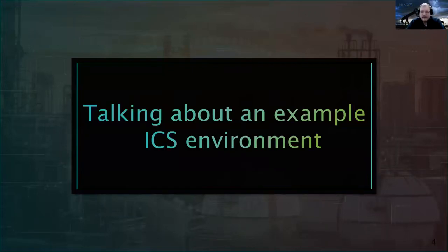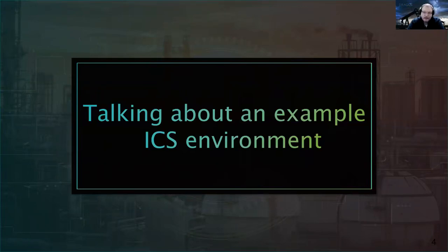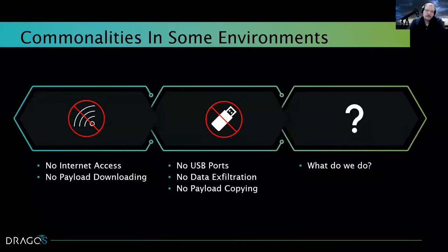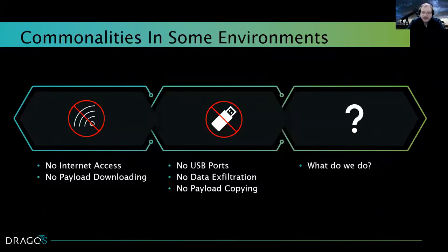Talking about an example ICS environment is really difficult because as penetration testers, we never know what type of environment we're dropping into, whether remotely or on site. We have no idea what type of configurations we're going to be up against or what kind of architecture is in place. But there are typically two commonalities that we see more often than not. The first is there's usually no internet access — at least we hope there's not. With no internet access, we don't have a way to download our payloads or scripts or establish connectivity to our centralized command and control infrastructure.